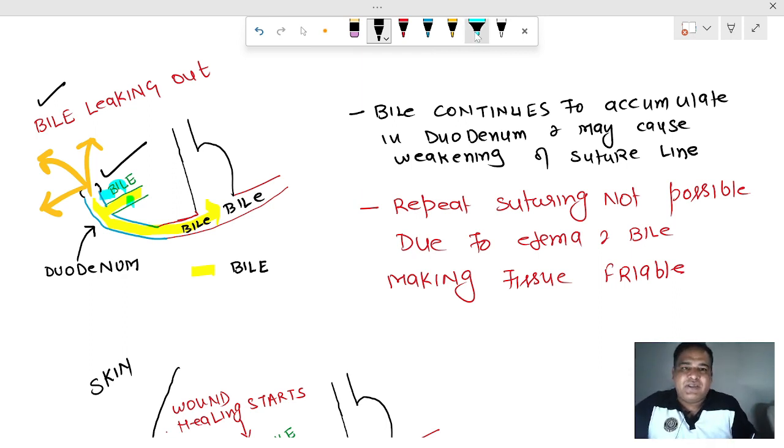The bile will start collecting around the duodenum. Remember, this bile has got digestive enzymes. It will not allow the tissue to heal properly. Repeat suturing is not possible because edema and the digestion of tissue by bile will make the tissue very fragile. You will not be able to apply the sutures.